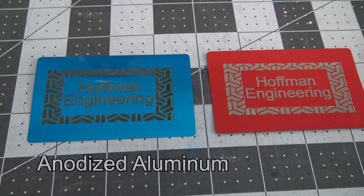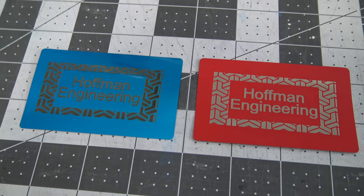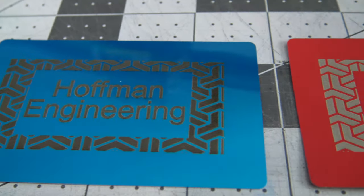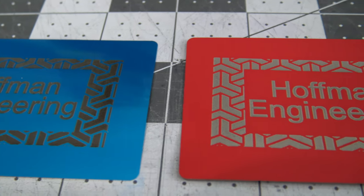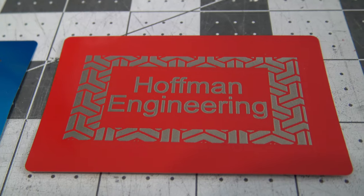Finally, let's check out anodized aluminum. I picked up these anodized aluminum business cards. We can burn away the oxide layer revealing the aluminum underneath. I found my best results running at 500 millimeters a minute at 100% power with a 0.05 millimeter line interval.